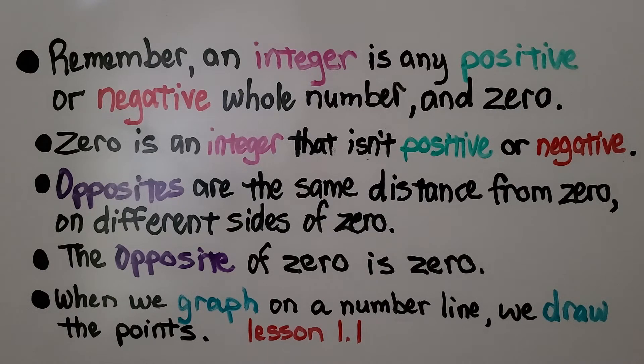When we graph on a number line, we draw the points. We plot the points. We learned this in the last lesson, 1.1, which is linked in the description if you missed it.